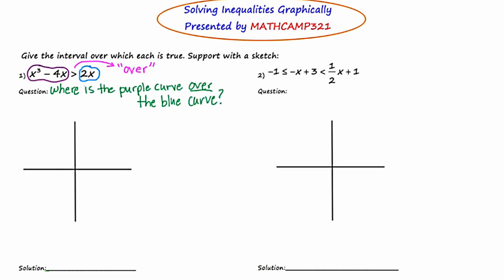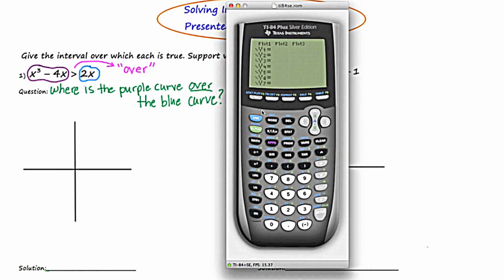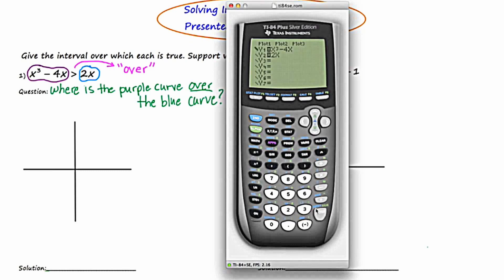Now I'm going to queue up the calculator and graph these two curves. I'll go to y equals and put in x cubed minus 4x — x cubed is in the math menu, option 3. Then I'll scroll down to y sub 2 and enter 2x for the blue curve. The calculator isn't a color calculator, but I can distinguish between the curves by making one of them thicker. I'll scroll up to y sub 1, scroll all the way to the left, and press enter to make it thick. So y1 will be the thick curve and y2 will be the standard line.